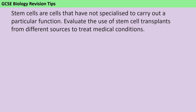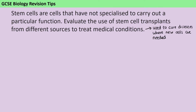Before we start comparing the advantages and disadvantages of different sources of stem cells, we need to think about what they actually are and the types of conditions that they can be used to treat. Stem cells are undifferentiated cells which are later able to become specialised to their function — that might be by growing additional subcellular structures or by changing shape. Stem cells can be used to treat diseases or conditions where we need a new source of cells, including paralysis from a severed spinal cord, anaemia, diabetes, and leukaemia.